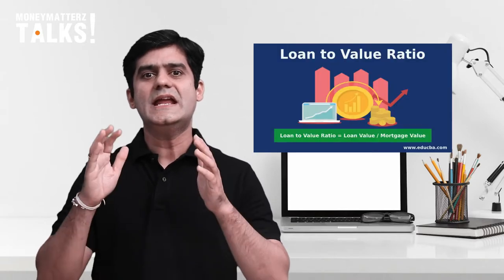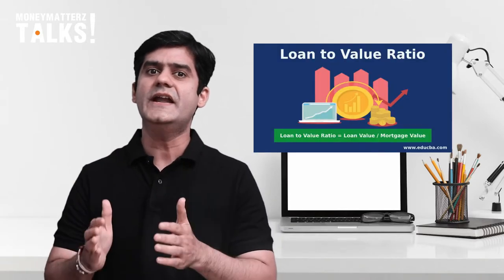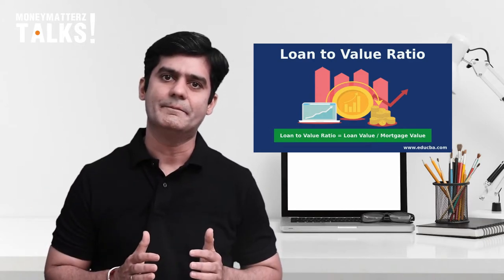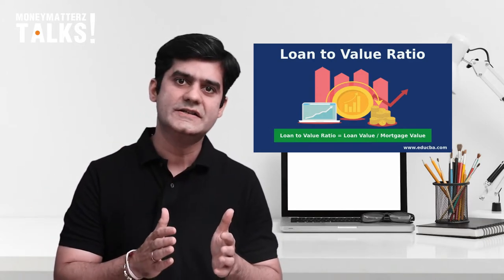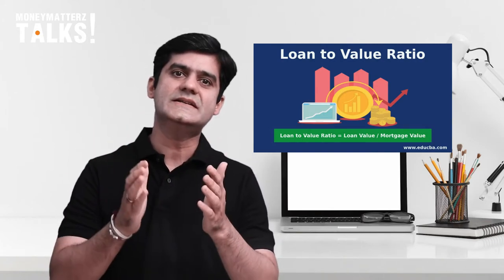You can get a loan against your equity portfolio or mutual fund portfolio at 50 to 60 percent of valuation. For your bonds, fixed income or debt instruments, you can get 80 to 85 percent. Of course, every bank or NBFC has their list of approved securities against which loans can be given to you.